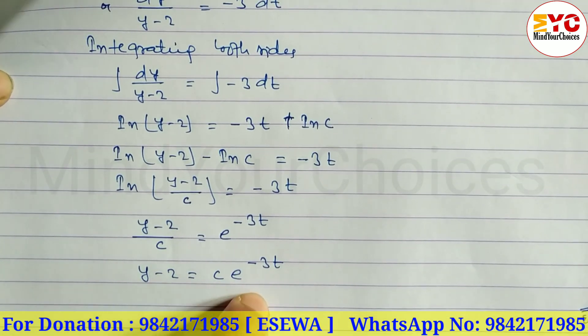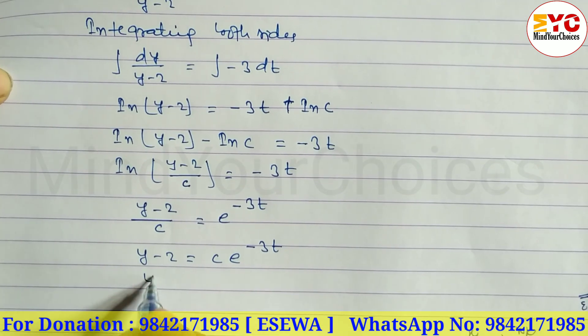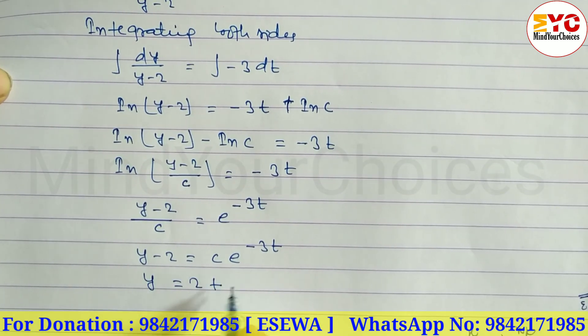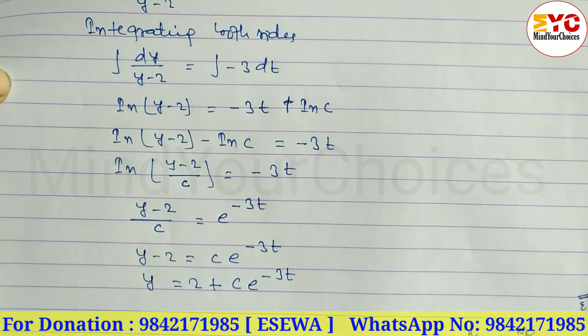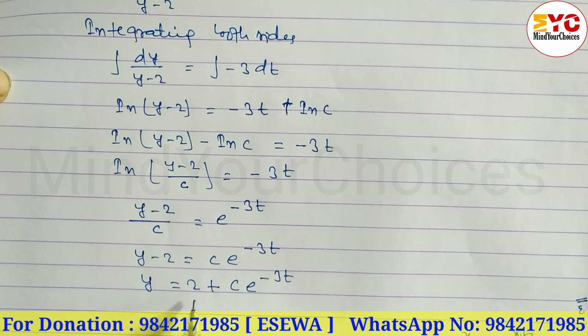Now we need to find the value of y, so moving 2 to the right side: y equals 2 plus c·e^(-3t). This is your answer.